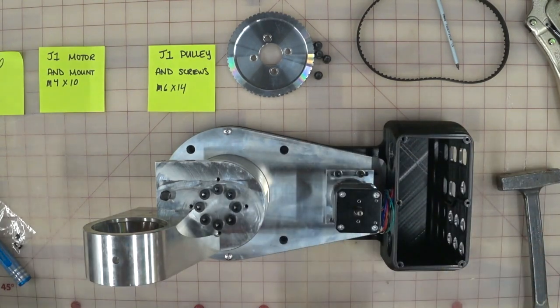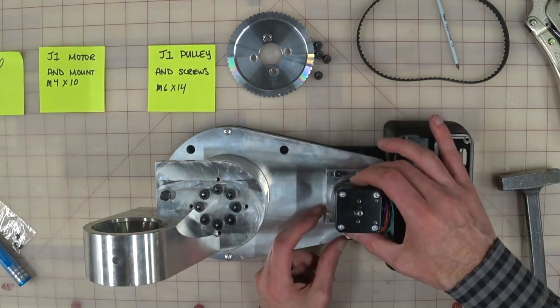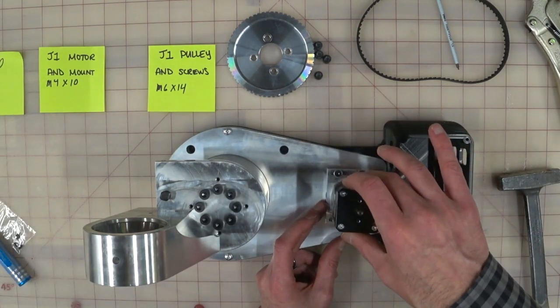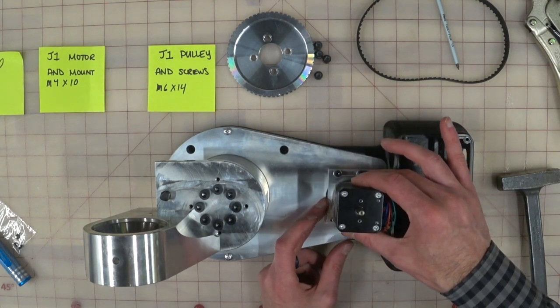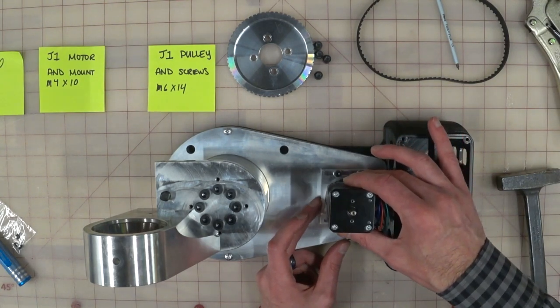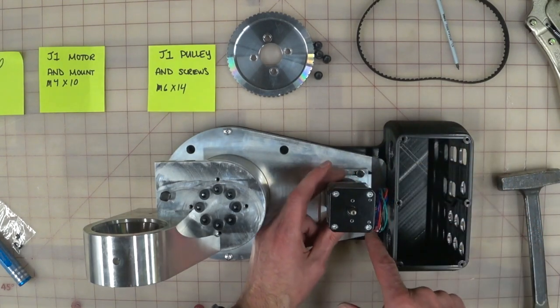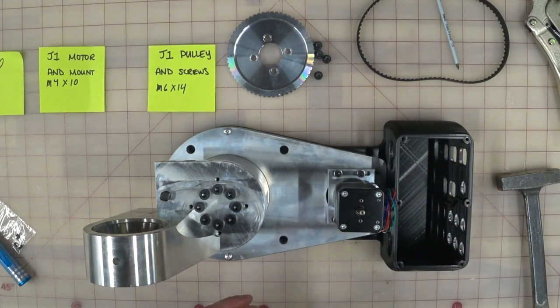And those go in there. And you want to run them all the way down and then come back like half a turn, maybe a turn. So all the way down and then back a bit. And then do that for the other three. All right, so we got all four of those in there. And now we've got the motor mounted, but we can move it back and forth and even wiggle it just a little bit. So this lets us be able to tension it later when we put the belt on.